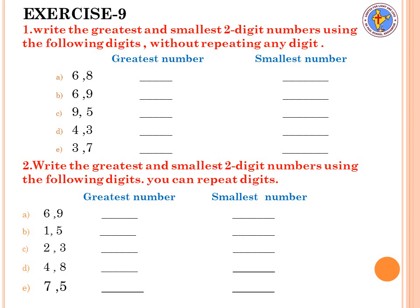Question number two: write the greatest and smallest two digit numbers using the following digits, and here you can repeat the digits. For example, digits 6 and 9 are given — the greatest number will be 99 and the smallest number will be 66. Follow the same pattern for the remaining answers.